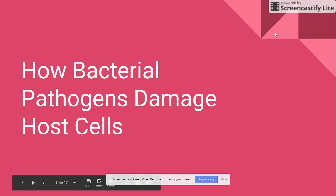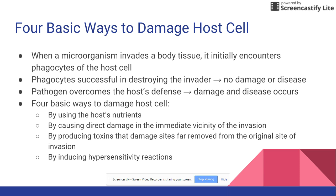Yesterday we talked about how bacteria cells enter the host cell and penetrate the host's defense systems. Now we're going to look at how pathogens can actually damage host cells. The microorganism invades the body tissue and initially encounters phagocytes of the host cell. Phagocytes are cells that try to eat and kill any pathogen that enters the host body, so they're the first line of defense.